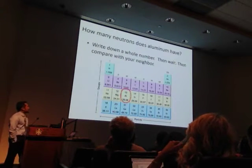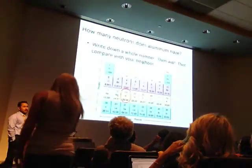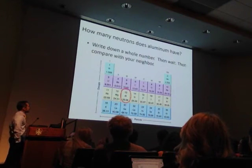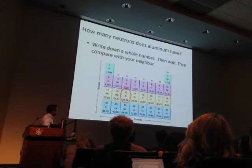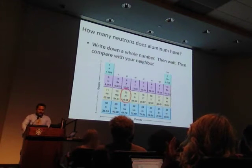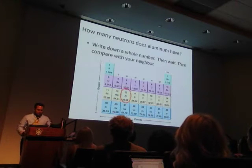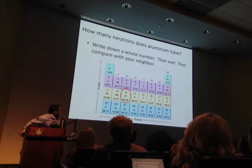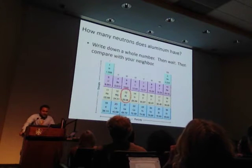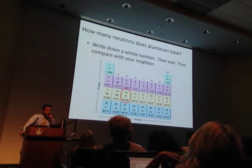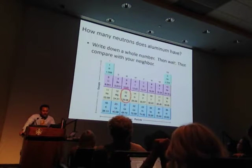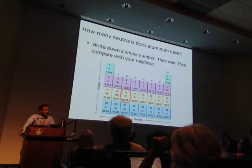How many neutrons does aluminum have — otherwise known as aluminium? I circled it for you in case you couldn't find it. So how many neutrons does it have? 14 neutrons. How do you get 14 neutrons? The atomic number is 13, the atomic mass is 27, and you take the atomic mass minus the number of protons, which gives you 14.